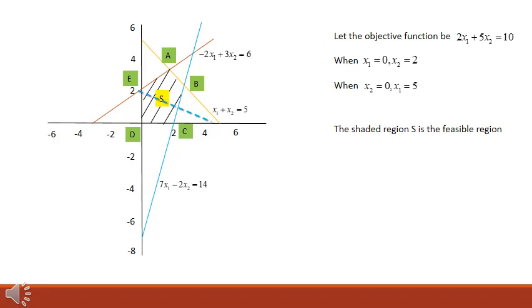Analogous to the first example, we assume 2x₁ plus 5x₂ equals 10, so when x₁ equals 0, x₂ equals 2, and when x₂ equals 0, x₁ equals 5. We draw the linear objective function as the blue dashed line. Sliding the line parallelly rightwards, the maximum that can be reached within the feasible region is at point A. So A is the optimum point.